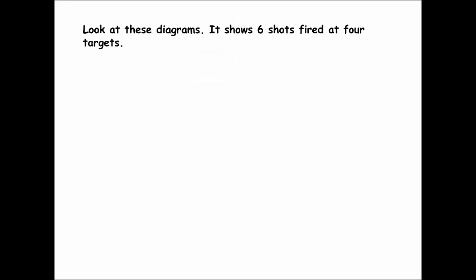Look at these diagrams showing six shots fired at four targets. In target one, the shots are precise but not accurate. They're precise simply because they're all very close to each other, but they're not accurate because they're not anywhere near the bullseye. The closer they would be to the bullseye — the accepted value if you're talking about numbers — the more accurate it would be.